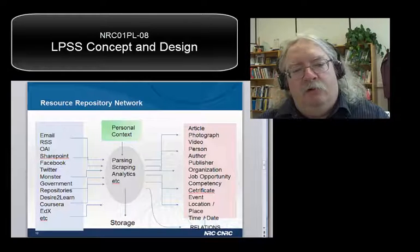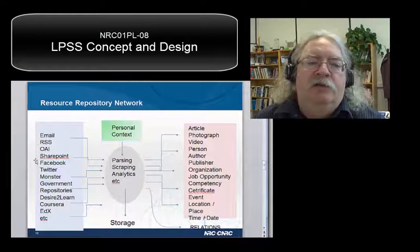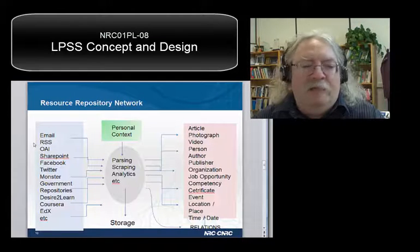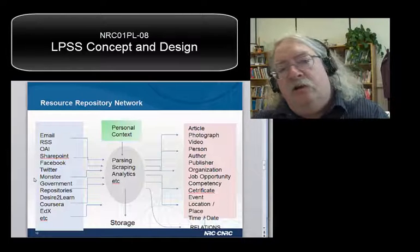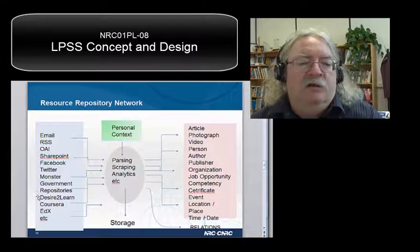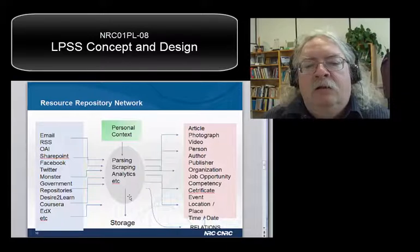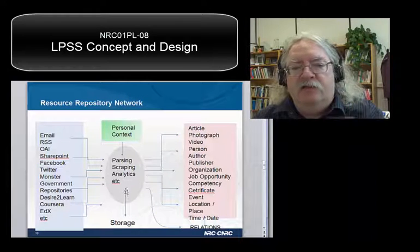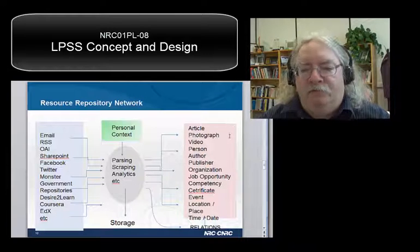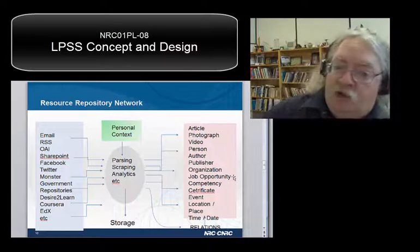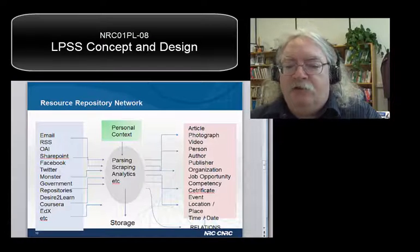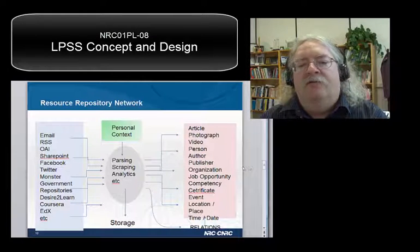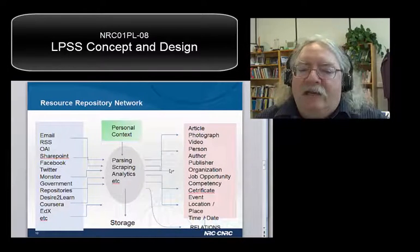Here's the resource repository network represented graphically. Look at the different kinds of information out there on the internet that you use today: email, blogs, Flickr pages, SharePoint repositories, Facebook, Twitter, Monster.com for job opportunities, government repositories, learning management systems, etc. The RRN brings that content into your system, then analyzes it, looks for entities, and stores it in the graph. The graph is made up of different types of things: articles, photos, videos, people, authors, publishers, job opportunities, competencies, and even certificates. It's a bunch of different entities stored in the graph, related to each other so that if you're looking at one, you can see what's related to it.